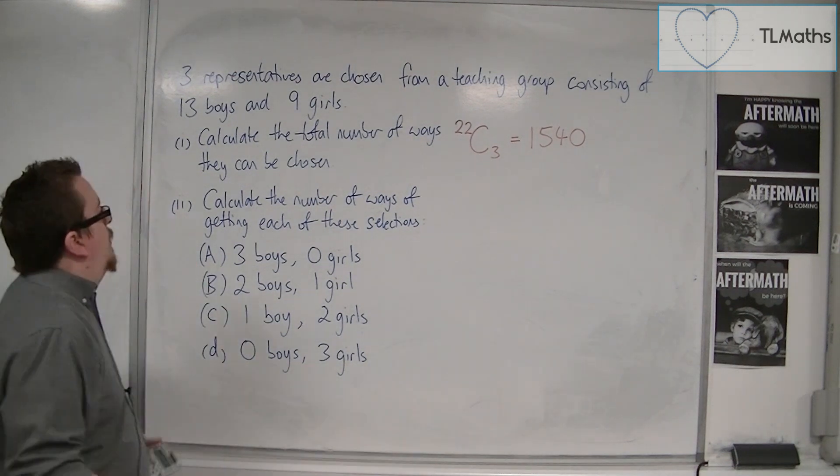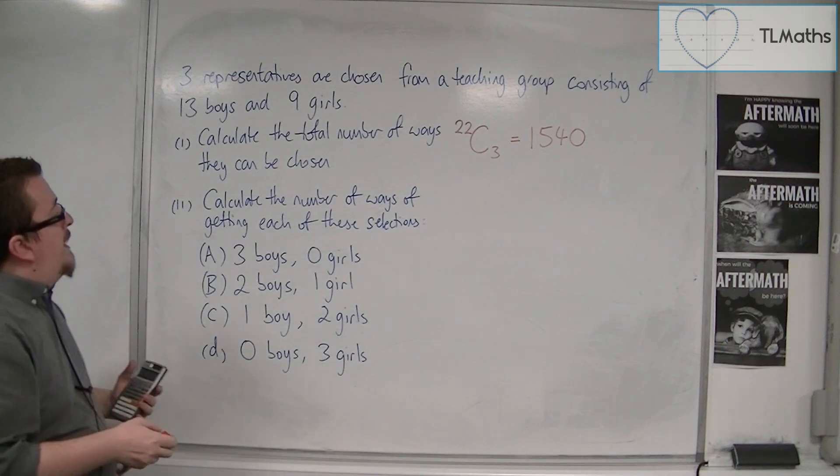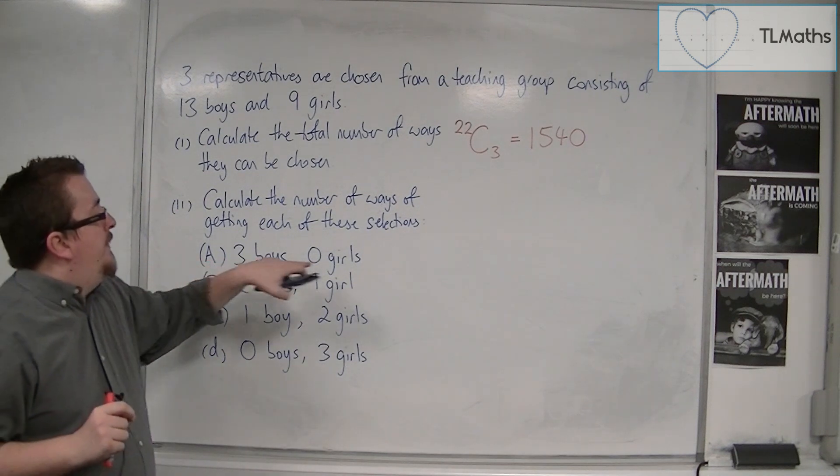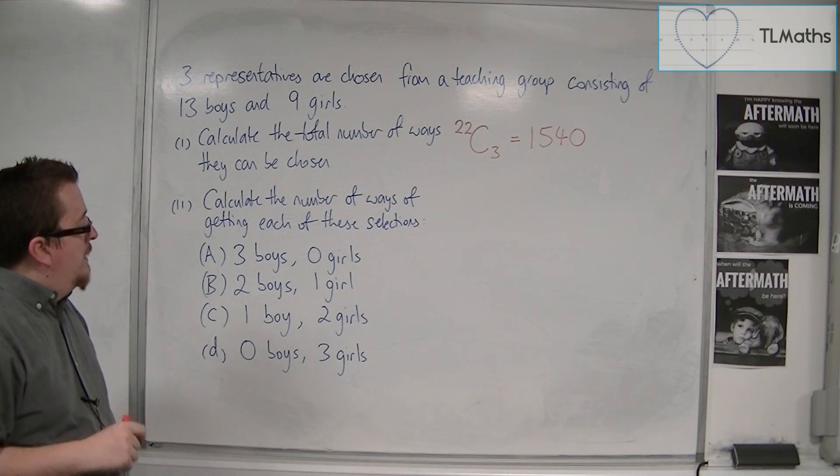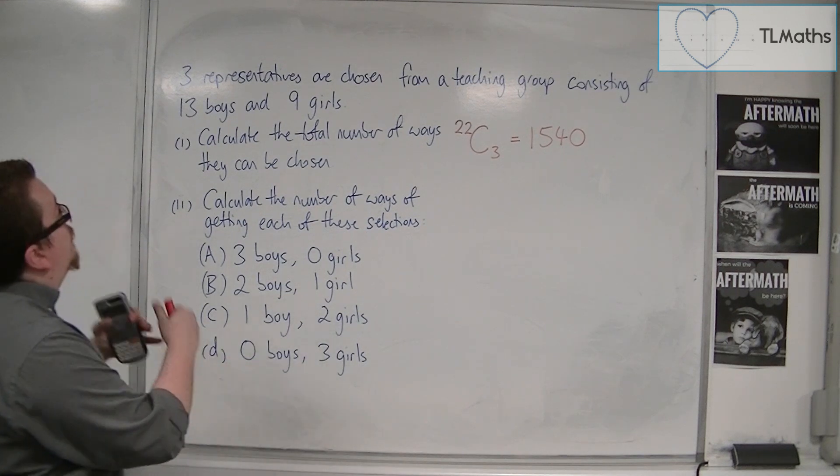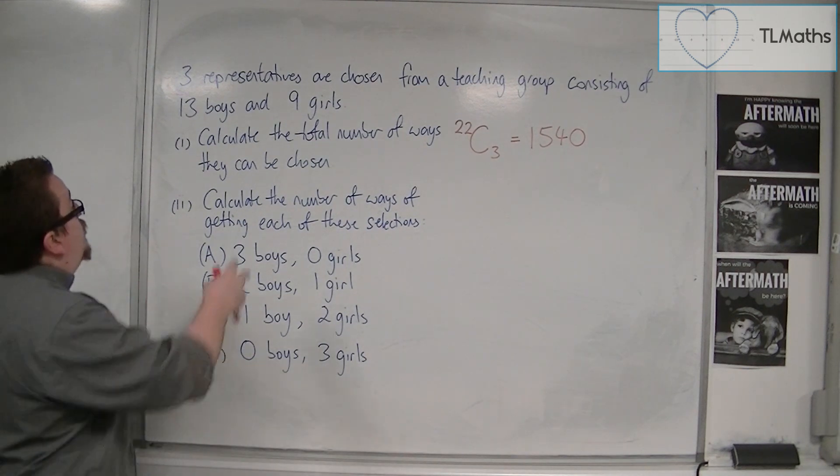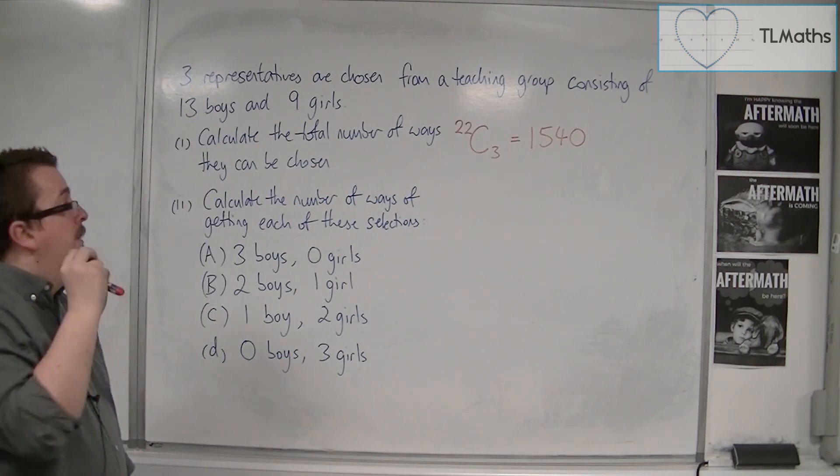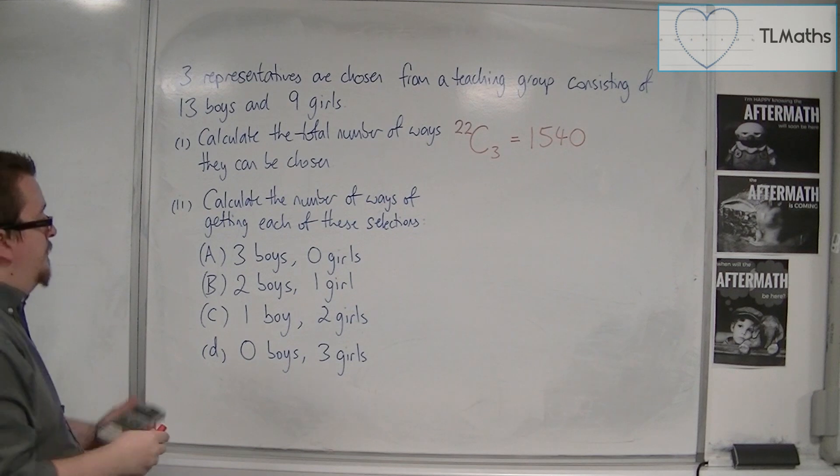Calculate the number of ways of getting each of these selections. Three boys and zero girls. If I want to select three boys, then I'm looking just at how I can select three boys out of 13 boys. So I would look at 13 choose 3.